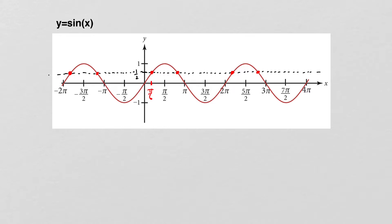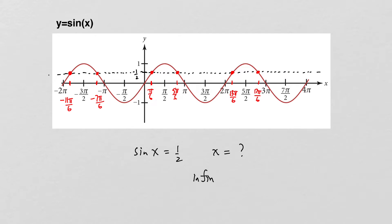This gives pi over 6 and 5 pi over 6, but then there are other values: 13 pi over 6, 17 pi over 6, and in the other direction, negative 7 pi over 6, and negative 11 pi over 6. So if we're looking at all values of x where sine of x equals 1/2, there would be infinitely many solutions.